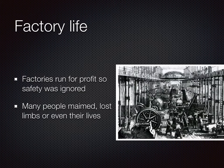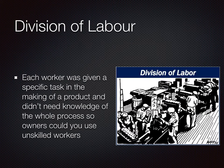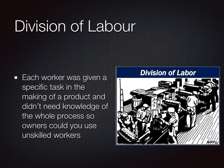Factories were run for profit, so expensive safety measures were ignored, and many injuries — including maiming, loss of limbs, and even death — happened in these very dangerous factories. This was due in part to something called the division of labour, which meant that each worker was given a specific task in the making of a product. They didn't have knowledge of the whole process — they were trained in just one specific task.